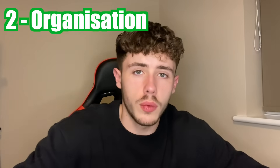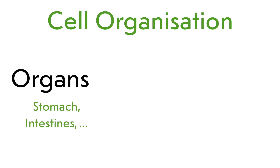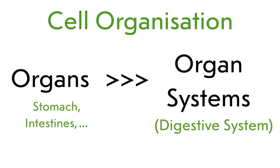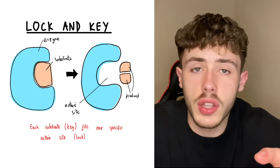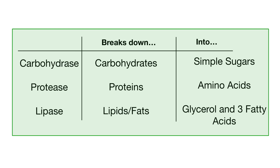Topic number two: organisation. First of all, cells make up tissues, tissues make up organs, and organs make up organ systems. Within the digestive system there are lots of enzymes. The most important thing with enzymes to know is the lock and key model, or lock and key theory. Some examples of enzymes within your digestive system are protease, carbohydrase and lipase — it is really important you remember those three.